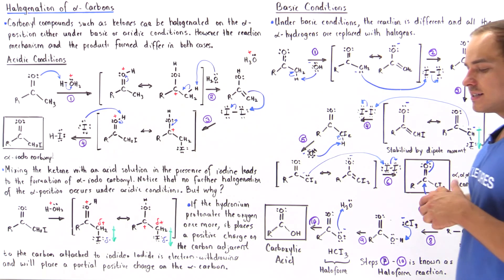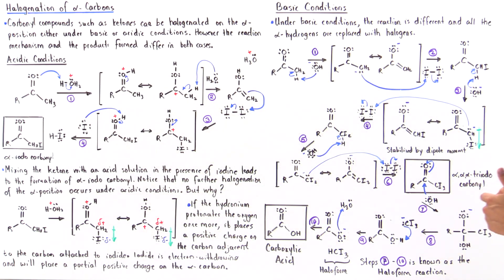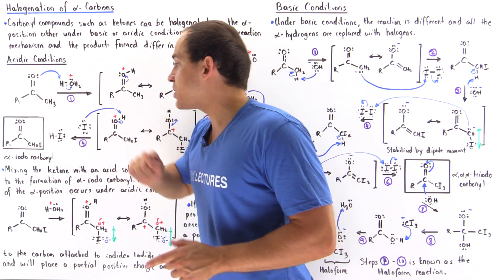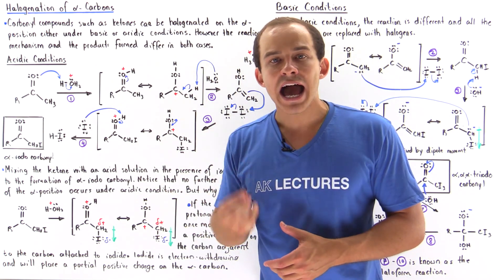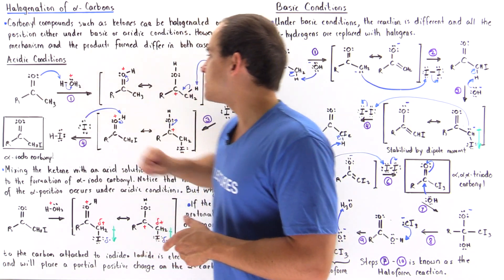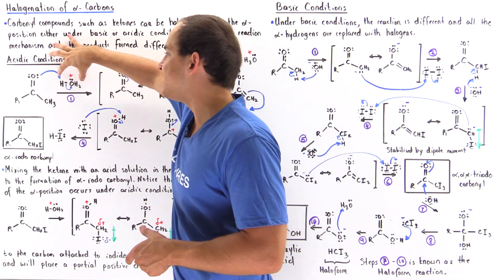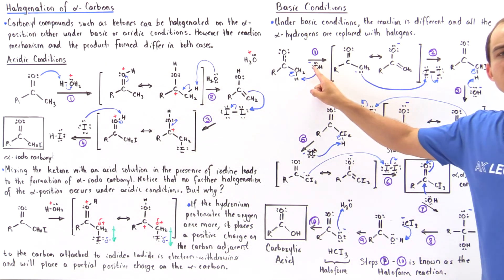Now let's move on to basic conditions, which are a bit more complicated. Under basic conditions, the reaction is different: all of the alpha-hydrogens are replaced with halogens. When all those H's are replaced with halogens, another reaction known as the haloform formation reaction takes place, as we'll see in just a moment. We begin with the same ketone as before, but now under basic conditions we replace our hydronium with hydroxide.